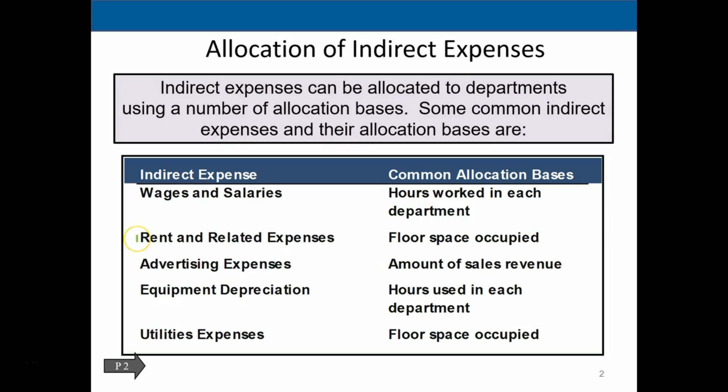For rent and related expenses, the rent on the entire building should be applied to the different departments within the building. Floor space is a good allocation basis here — the department with more floor space should get allocated more of the rent.